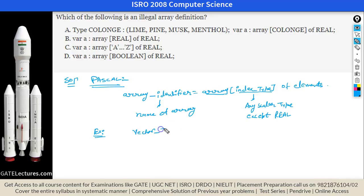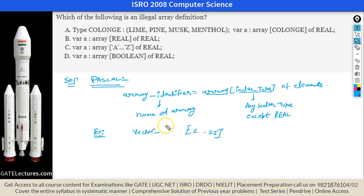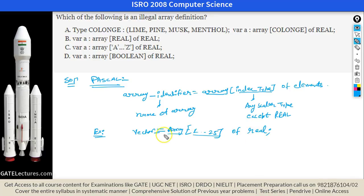For example, you can declare 'Vector: array [1 to 25] of real' — this is the name of the array, the index range is 1 to 25, and the elements are of type real. That's how we declare an array in the Pascal language.